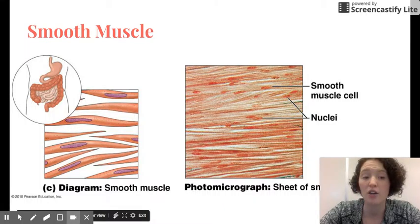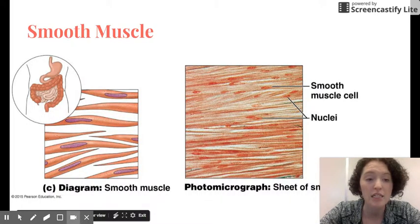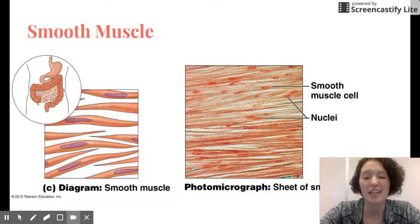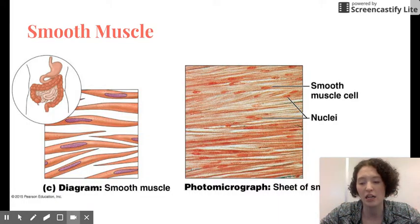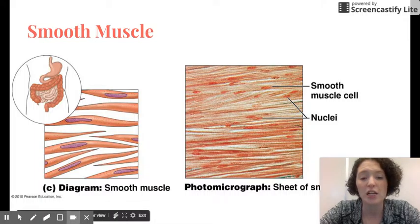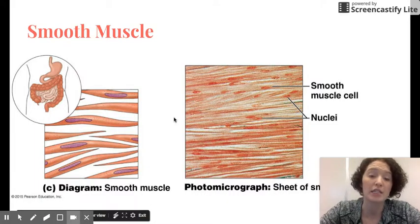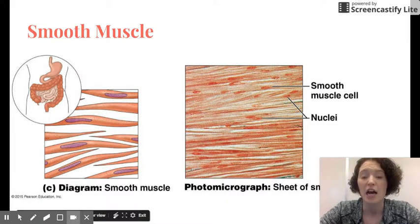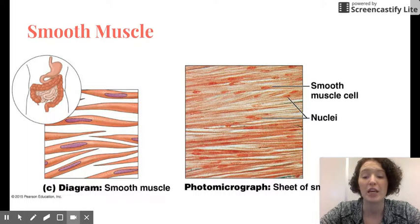They're in these weird, interesting spindle shapes where they come to these tapered points, not these long fibers or intercalated discs anymore. These are going to be found in the walls of hollow organs, like the stomach and the intestines, and are going to produce the movement in those. Those are also involuntary.